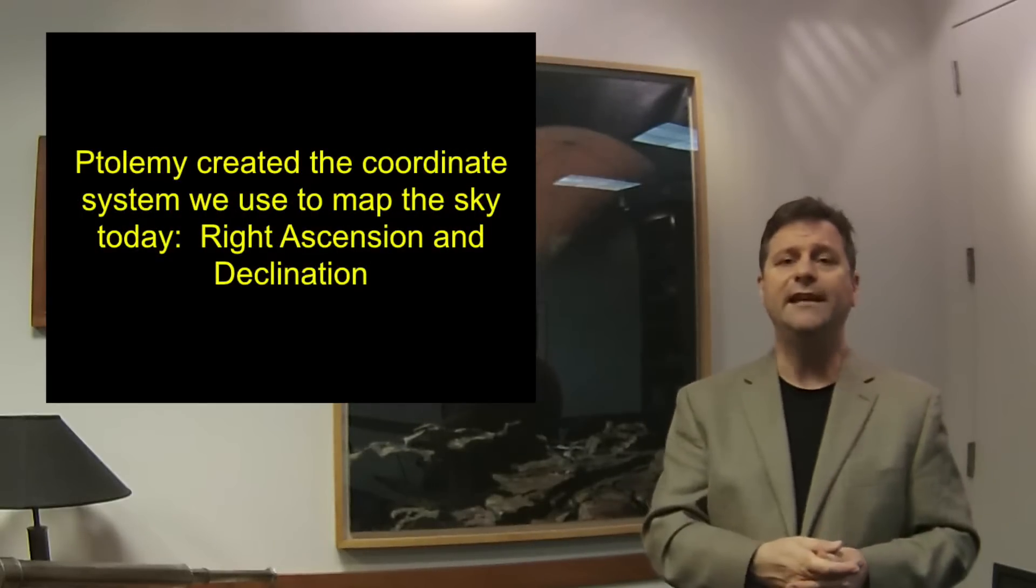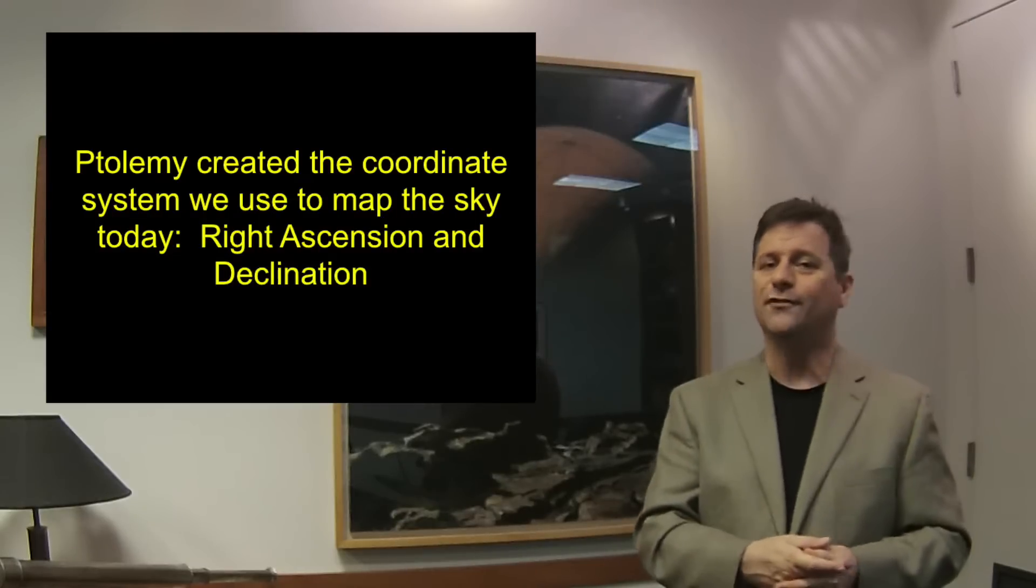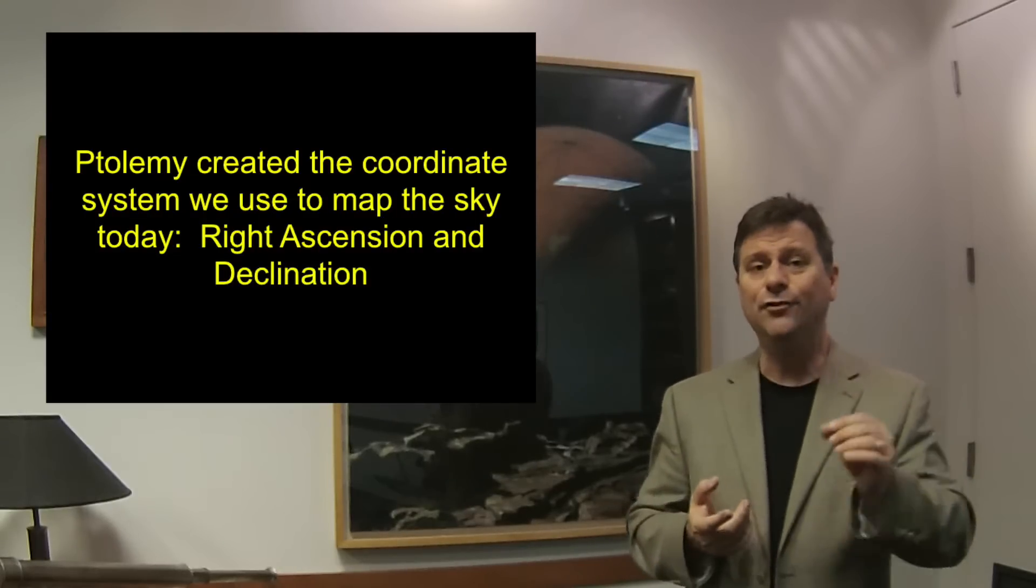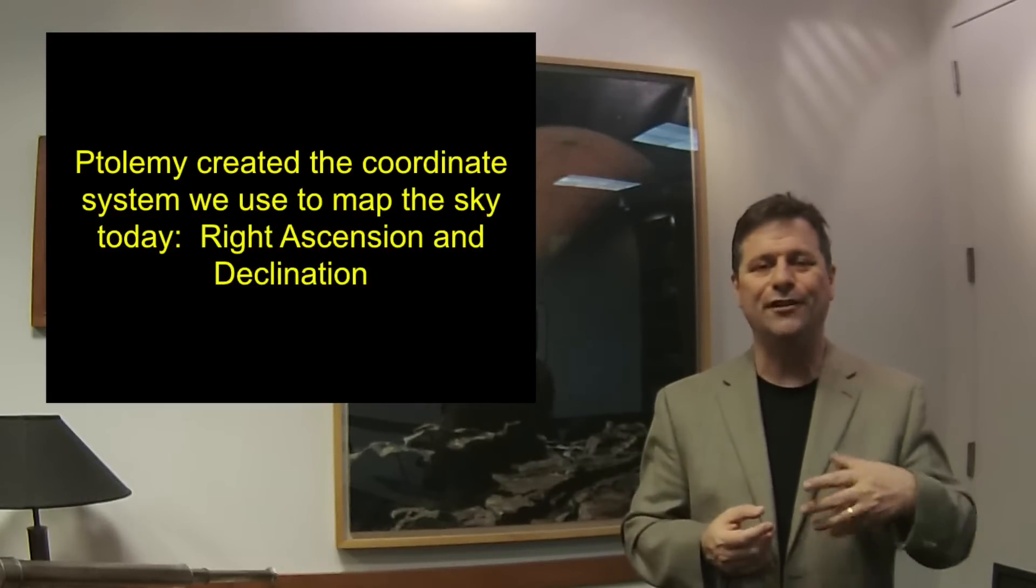So first Ptolemy posited, along with Aristotle, that the earth was at the center. Alrighty. So then he wanted to see how things move. So he created a coordinate system, the equatorial coordinate system, which is the right ascension and declination. And he used the right ascension and declination of the stars and planets to determine the positions.